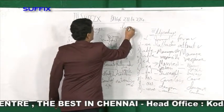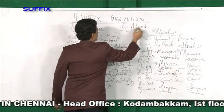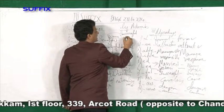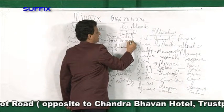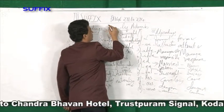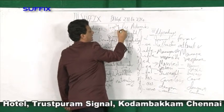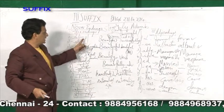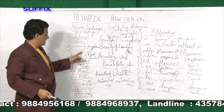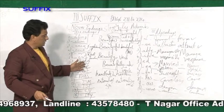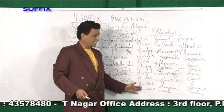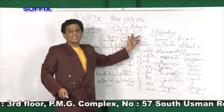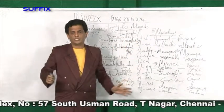And all '-ly' endings are adverbs. For example, 'successful' with '-ly' becomes 'successfully', which is an adverb. 'Slow' with '-ly' becomes 'slowly'. 'Dangerous' with '-ly' becomes 'dangerously.' So all words ending with '-ly' become adverbs. All adjectives, if you add '-ly', become adverbs.